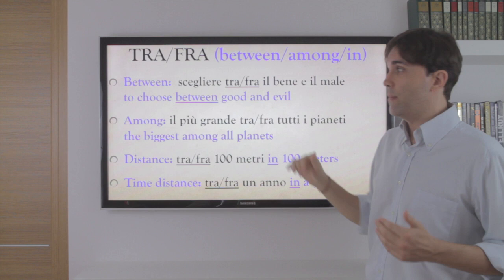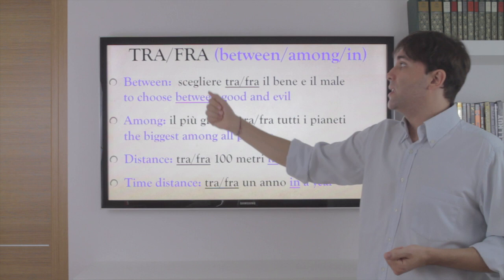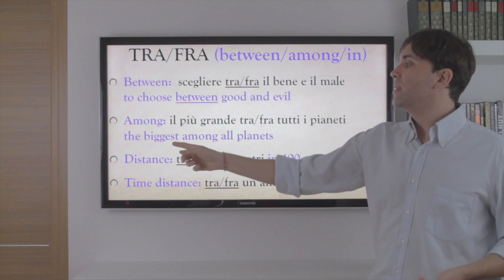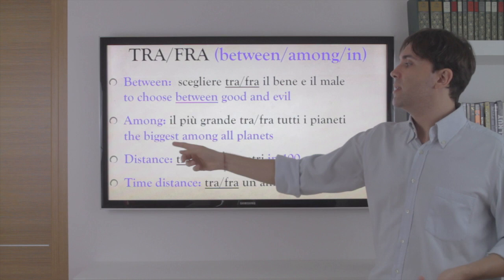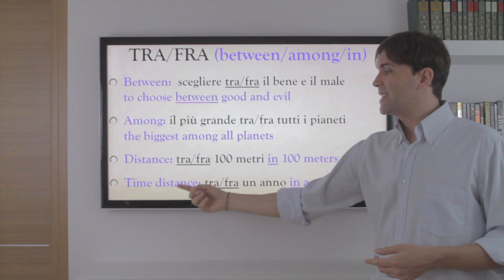And finally, tra or fra — as I said before, it's the same thing, è la stessa cosa. It can mean 'between' — scegliere tra il bene e il male, to choose between good and evil. It can also mean 'among' — il più grande tra tutti i pianeti, the biggest among all planets. And distance — tra cento metri, in 100 meters. And time distance — tra un anno, in a year.